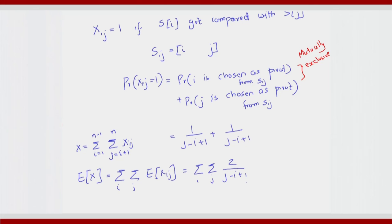Now, it turns out that with some amount of reordering and restructuring of the summation we can simplify this expression. The first thing I am going to do is substitute k for (j-i). This gives a summation over i — retaining i as ranging from 1 to n minus 1 — and now k will range from 1 to n. The dependence of j on i has been eliminated, and fortunately we had j minus i in the denominator. So this gives us 2 divided by (k+1).